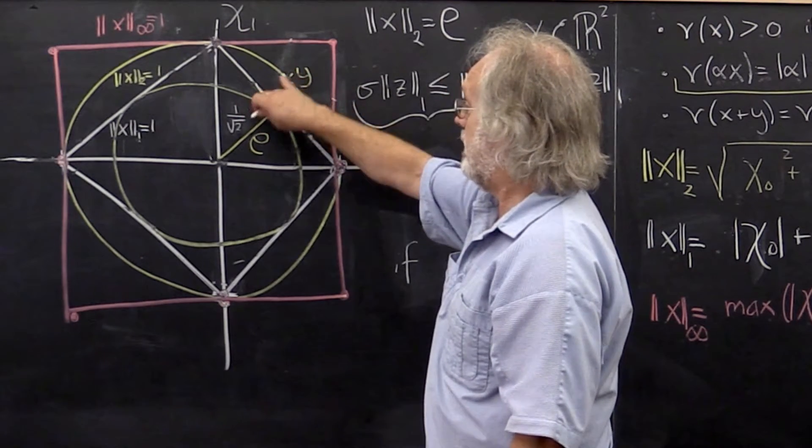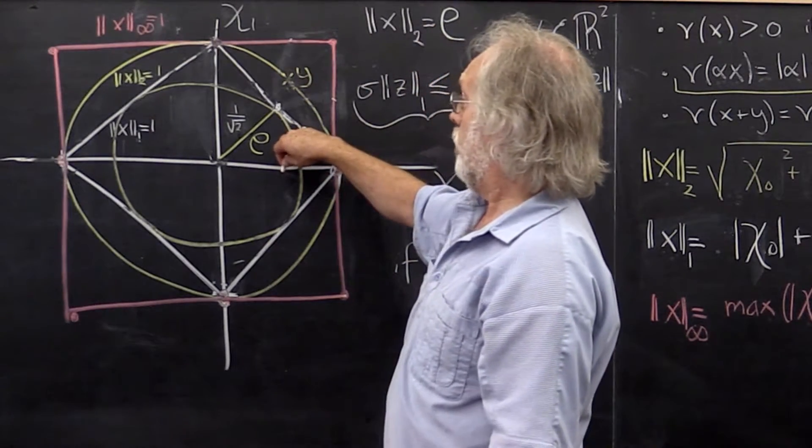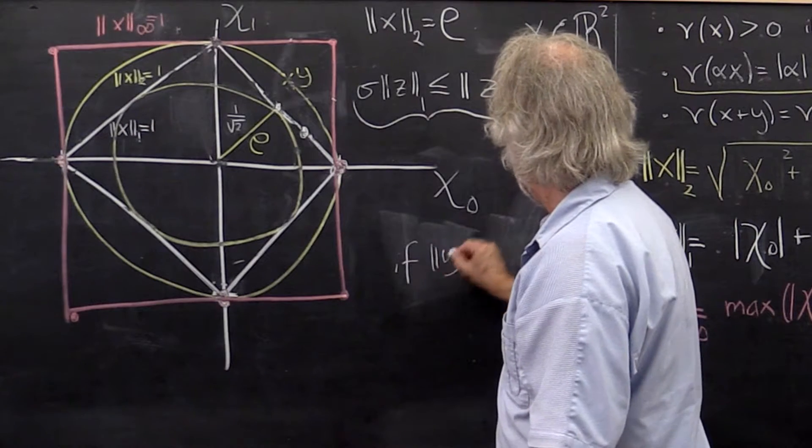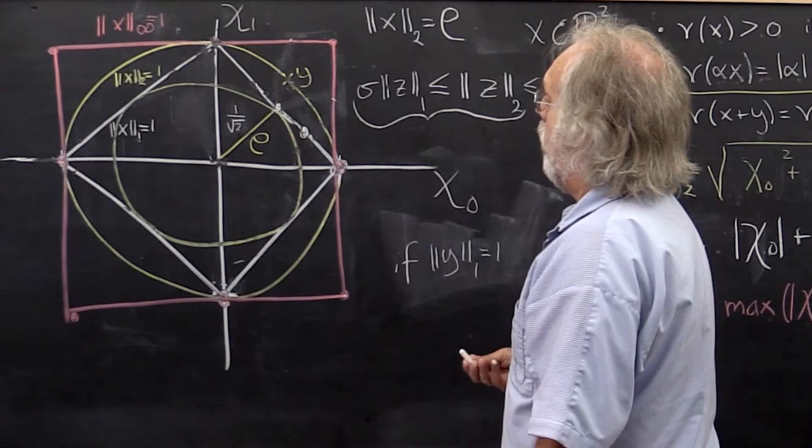Now what we're going to say is, what if y is on the unit ball for the 1-norm? If y in 1-norm is equal to 1, then what?